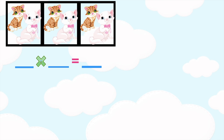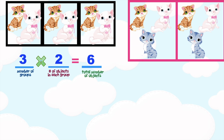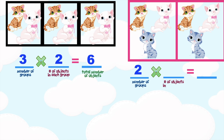With this next illustration, the first factor is 3 groups, and the second factor is 2 objects in each group, giving a total of 6. Then with the reversed arrangement, the first factor is 2 and the second factor is 3, also giving 6. So 3 times 2 is the same as the product of 2 times 3. Both give an answer of 6.